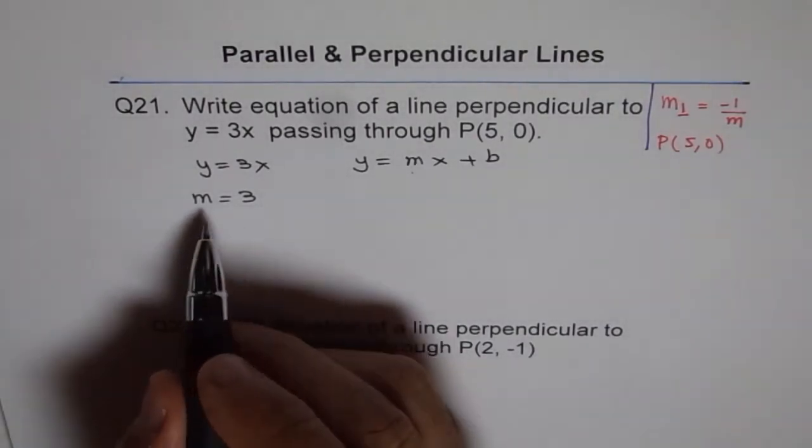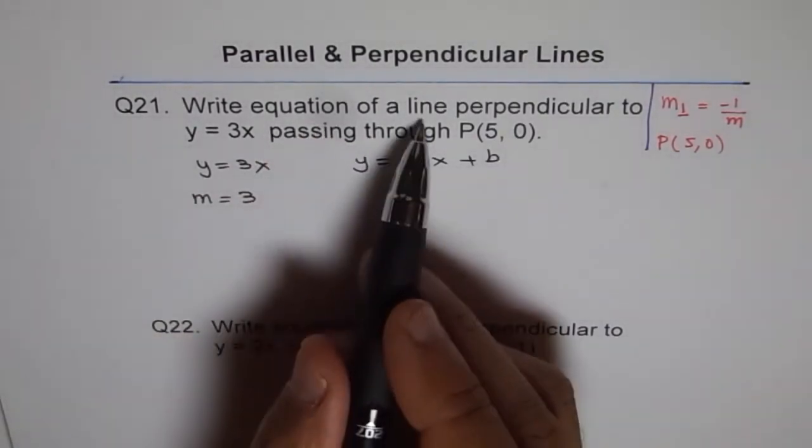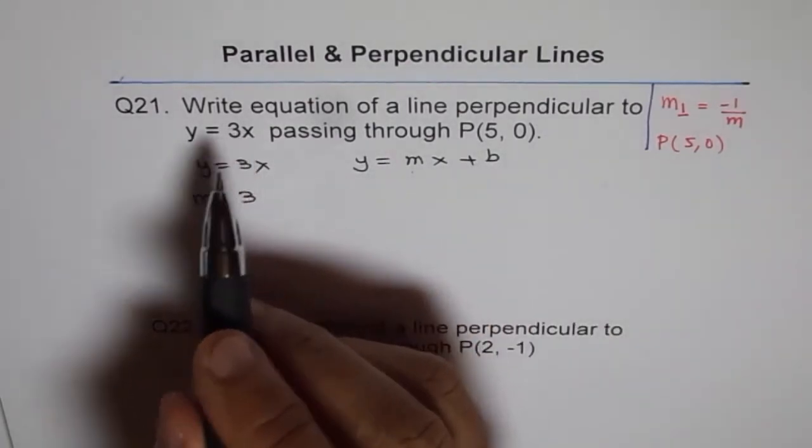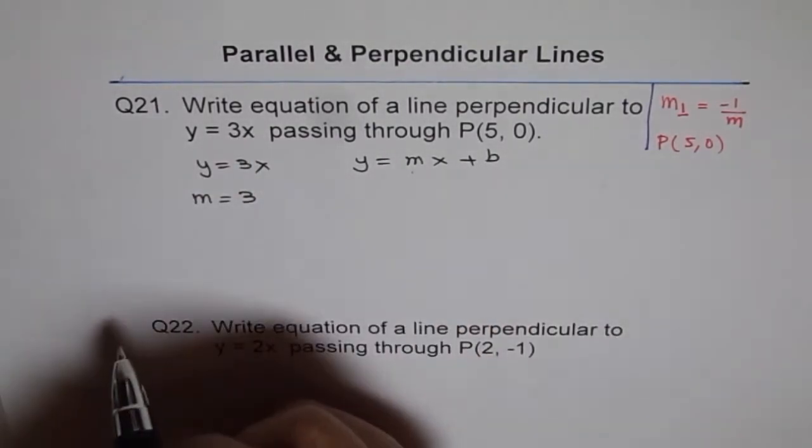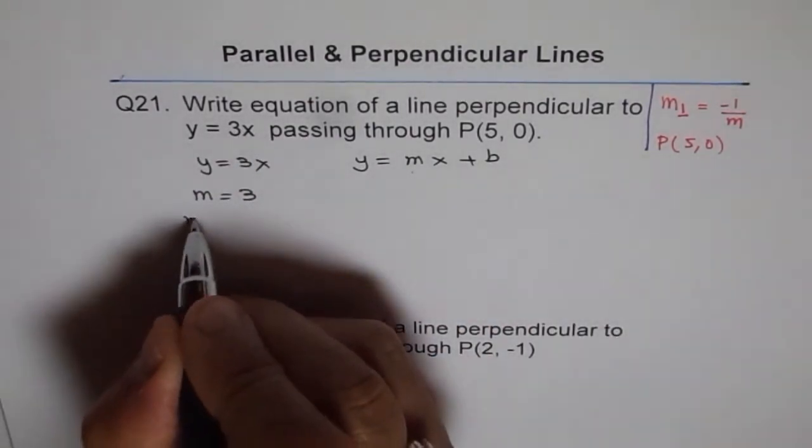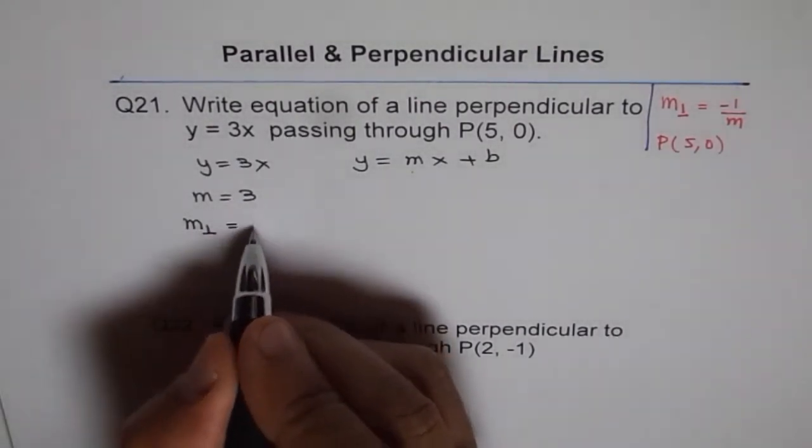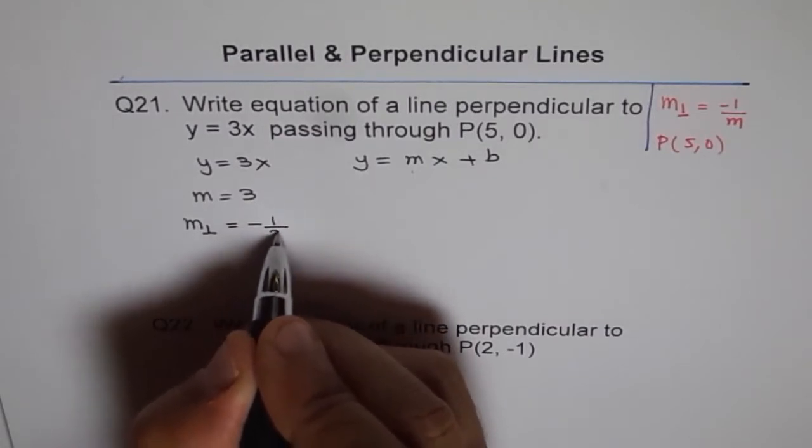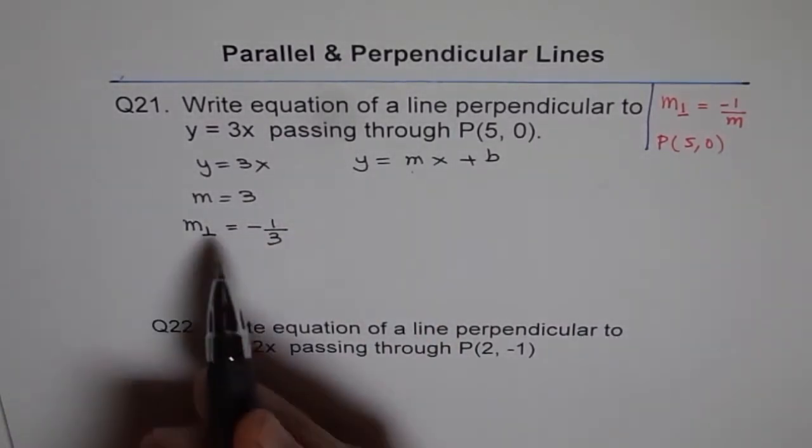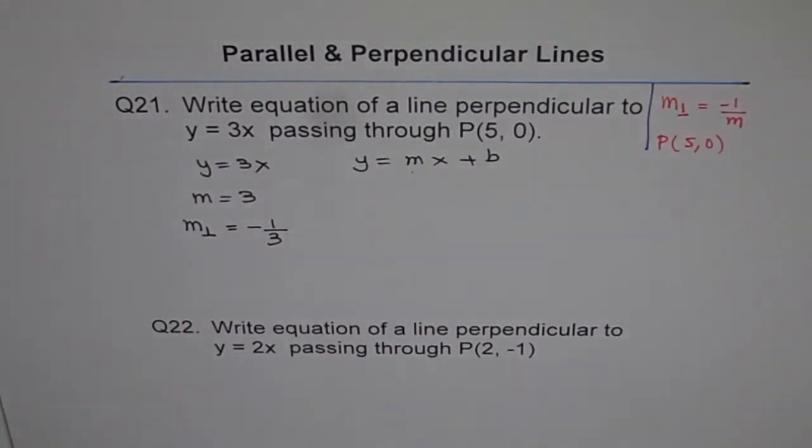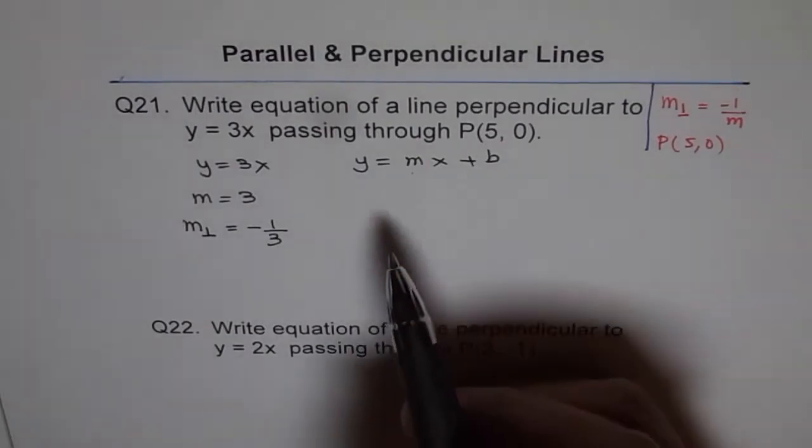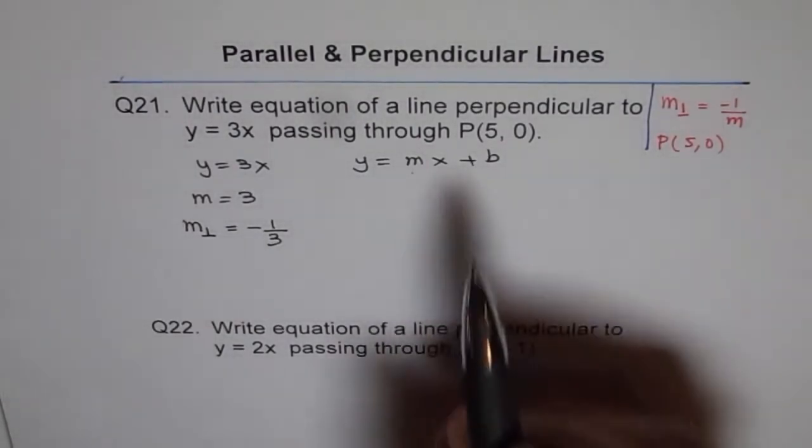The second part is, what is the slope of line perpendicular to this? Perpendicular should be negative reciprocal. Let me use this symbol m perpendicular. Do you see that perpendicular thing? It should be negative and reciprocal means 1 over 3. Do you see that? So that is negative reciprocal. So now we know what should be the slope of our perpendicular line.